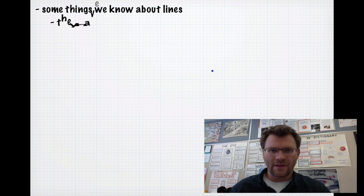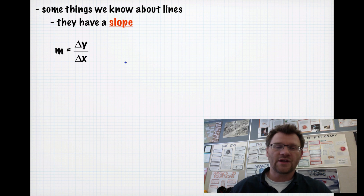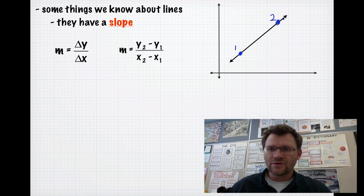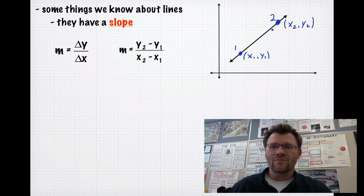Here are some things we already know about lines. We know that they have a slope, and this is really key for us today. We know that slope has been found in the past by using delta y over delta x — the change in y over the change in x. We also know that means if we have two points, it would be y2 minus y1 over x2 minus x1. So if we have point 1 with coordinates x1, y1 and point 2 with coordinates x2, y2, the change in height is y2 minus y1 and the change in x values is x2 minus x1.